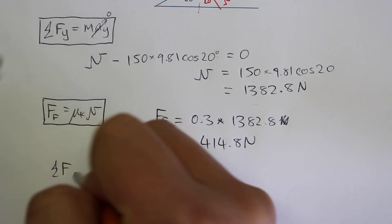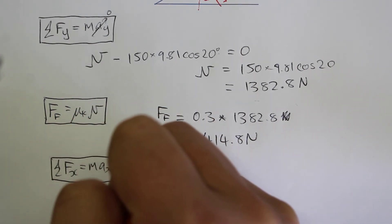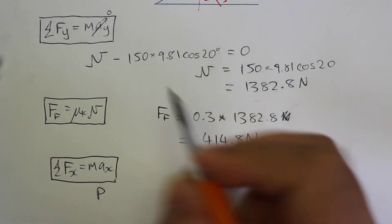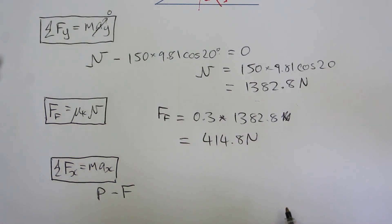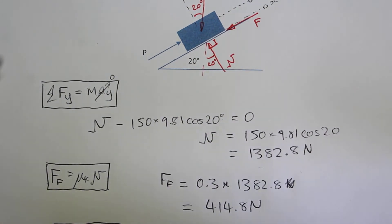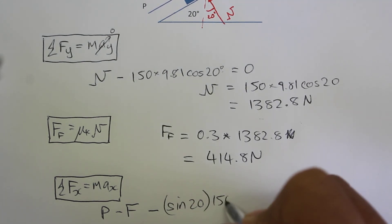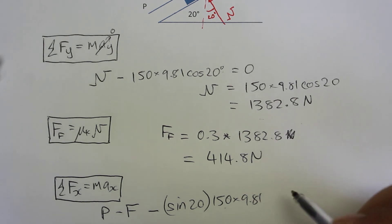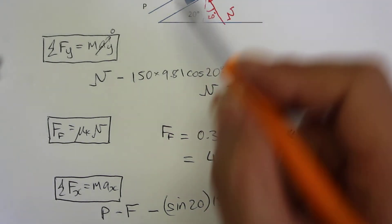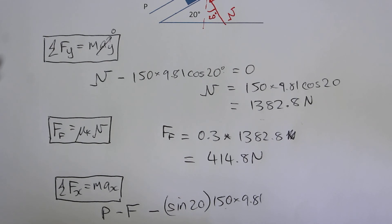So the sum of forces in the x direction is equal to mass times acceleration in the x direction. We have P minus F, minus the sine of 20 multiplied by 150 times 9.81. So this is the force times the component of that section based on the sine of that.